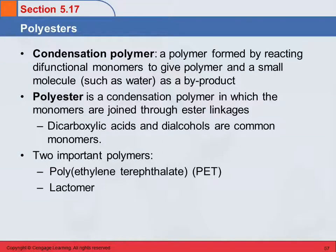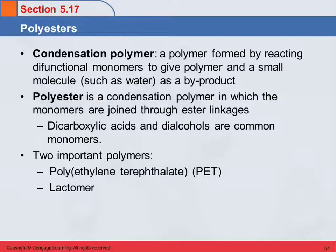You've probably heard of polyester, a very common polymer in fabrics. Polyester is an example of a condensation polymer — a polymer formed by reacting difunctional monomers to give a polymer, and you also get a small molecule, often water, as a byproduct. Polyester's monomers are joined through ester linkages. Common monomers for making polyester are dicarboxylic acids and dialcohols, which react to form an ester.